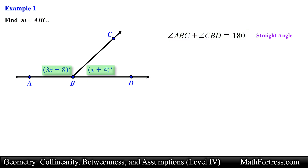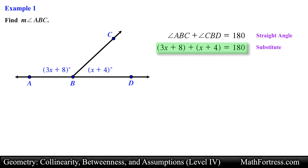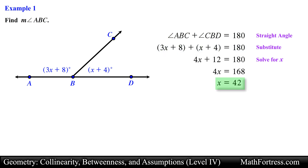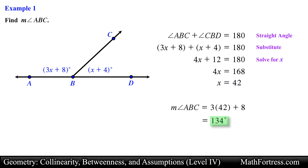We can now substitute the algebraic expressions for each angle into this geometric relation. Doing that we obtain the following equation. Simplifying and collecting like terms, and solving for the unknown variable, we obtain x equals 42. We now substitute this value into the algebraic expression representing angle ABC, and simplifying we obtain 134 degrees. This is our final answer.